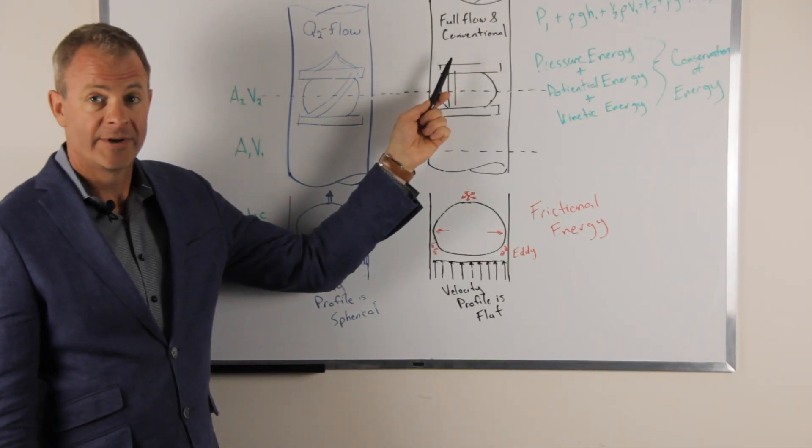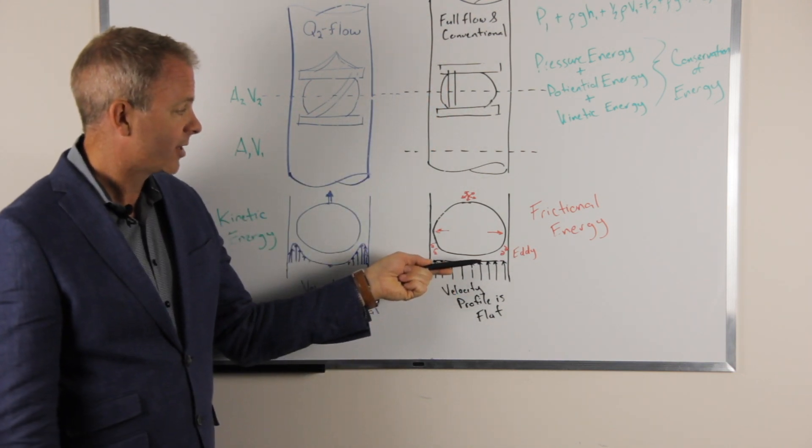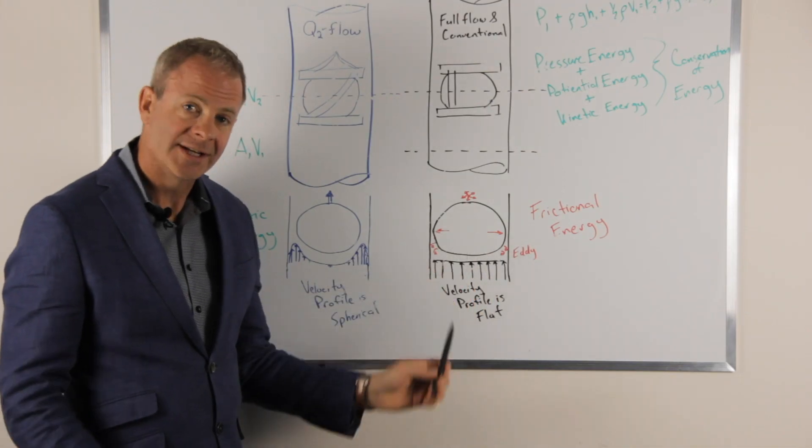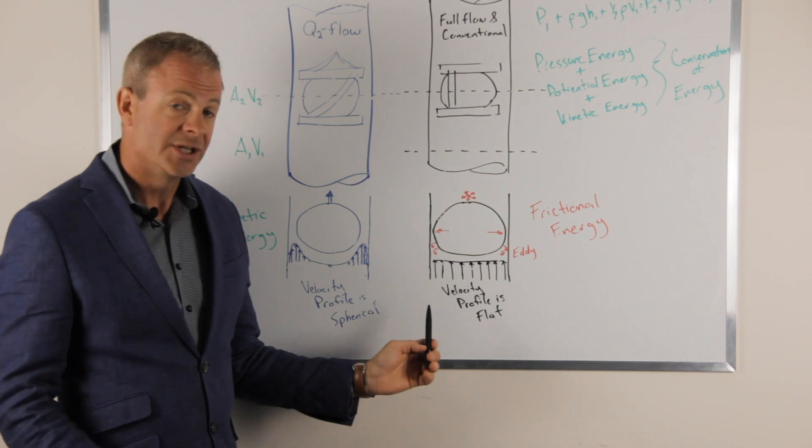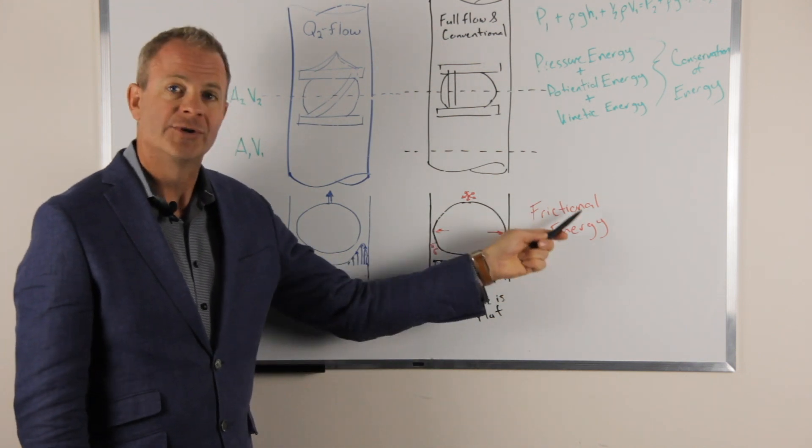With full flow cages and conventional cages, they have a flat velocity profile that comes up and the ball vibrates back and forth. One, that causes little eddies that cause pressure drop, which decreases your flow. Two, it causes a lot of frictional energy in your pumps.